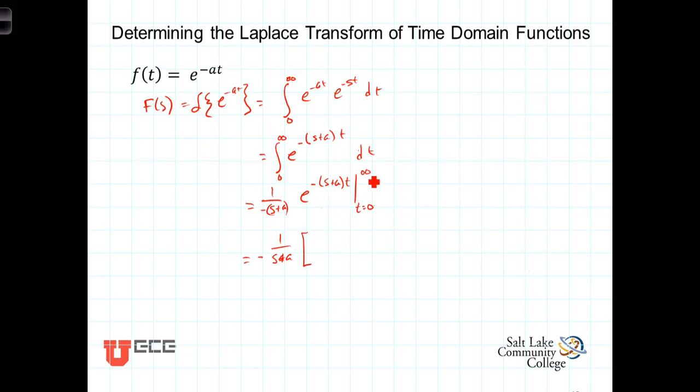Evaluating the exponential at the upper limit, we have e to the minus infinity, which is 0, minus e evaluated at the lower limit which is e to the minus 0, well that's just 1.